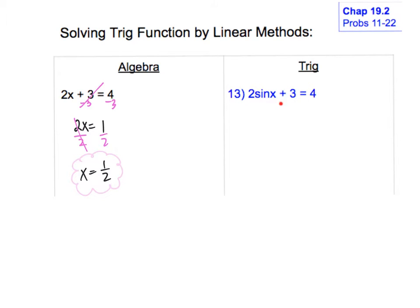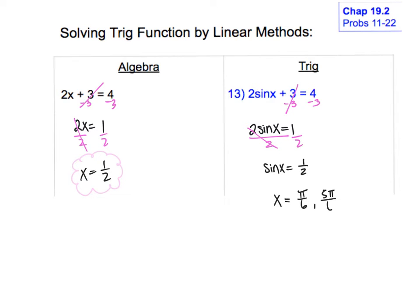Now on the trig side, you do the same steps — get the sine by itself. Subtract the 3 over, giving 2 sine x equals 1, then divide by 2, so sine x equals 1/2. Now I have to figure out when sine is 1/2, which was our bell work. Sine is 1/2 at pi over 6 and 5 pi over 6, using the unit circle to get those angles.